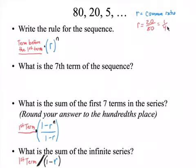This is your common ratio. So I need the term before the first term. Right there is my first term. So what would be right in front of that first term? What would be the number right in front?